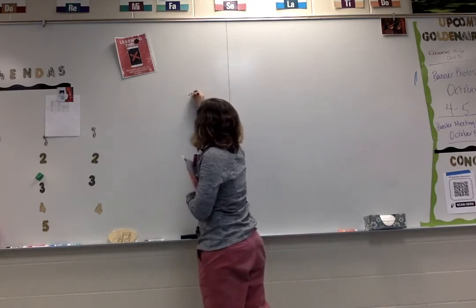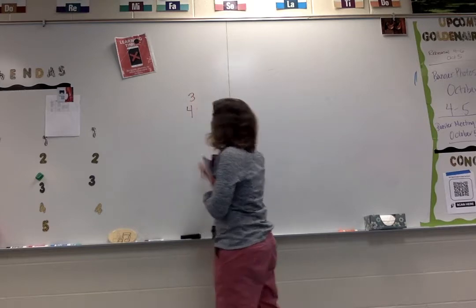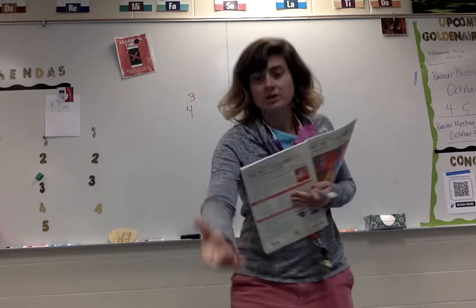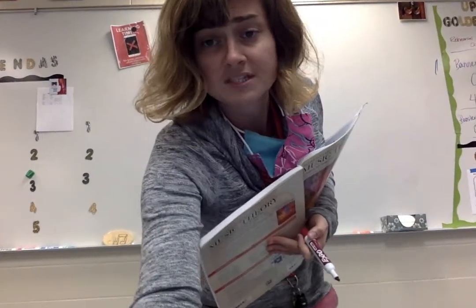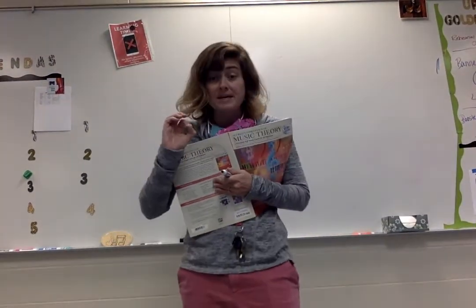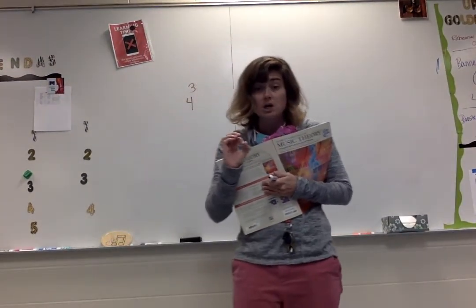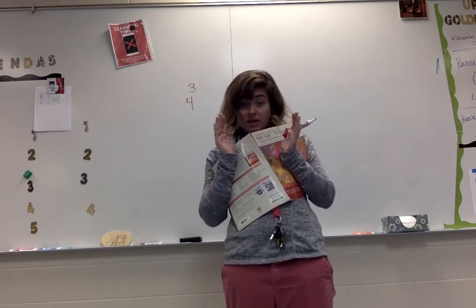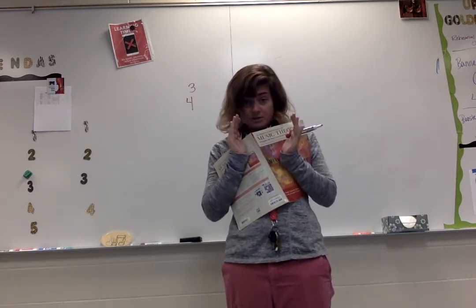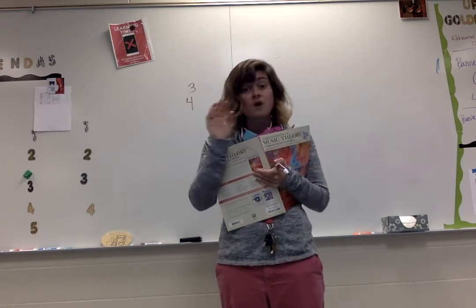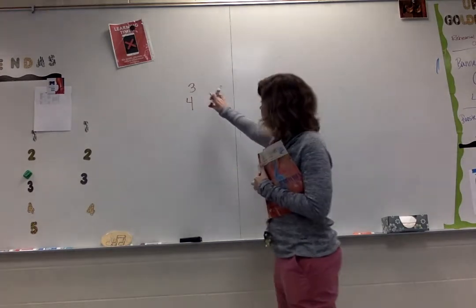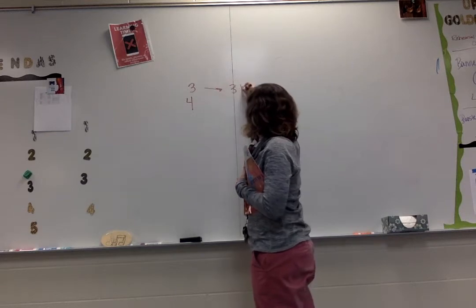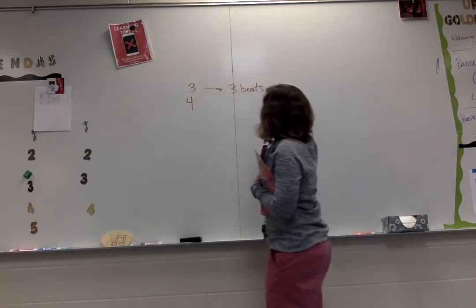Let's use this as an example. If we have a time signature 3/4 — 3 over 4 — that top number, let me pull you a little closer so you can see, the top number refers to how many beats per measure. So in the case of one set of bar lines, one little measurement of music, how many beats fall in that measure. In this case, 3 is how many beats per measure, because the number 3 is on top.